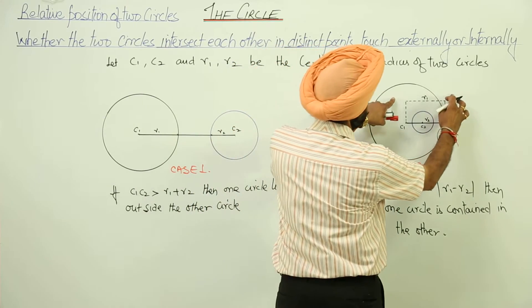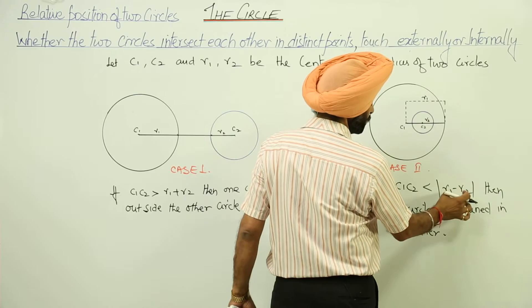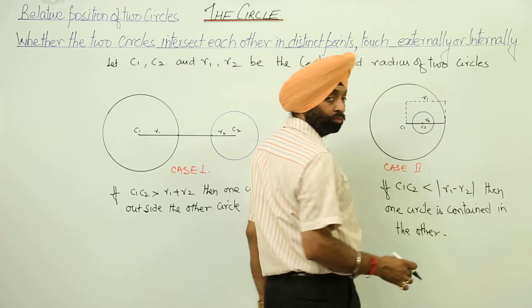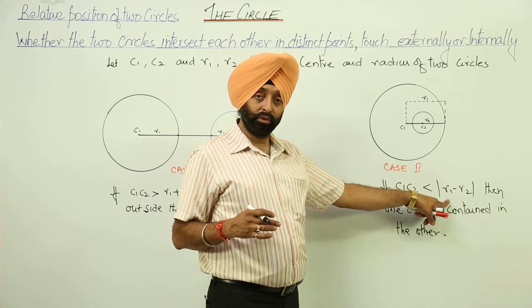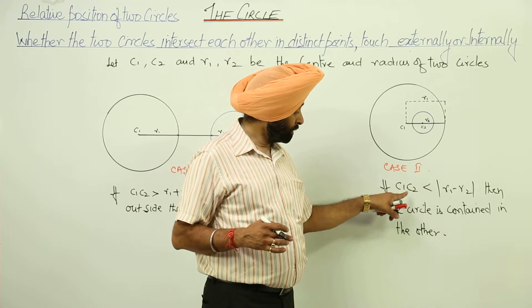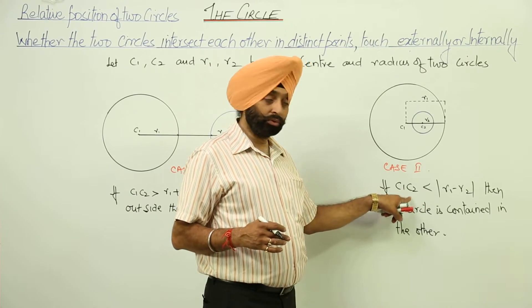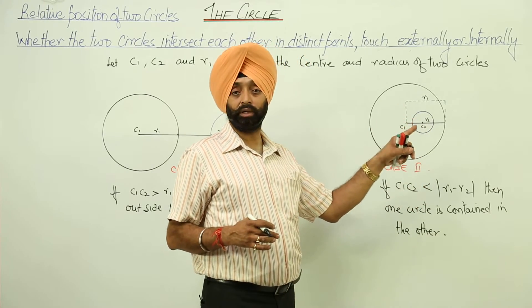This distance is r1, this distance is r2. If you are having r1 and r2 and their difference with the absolute value is less than c1, c2, then it is inside the other circle.